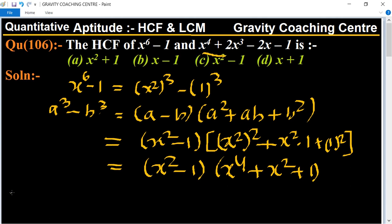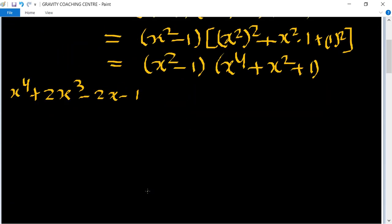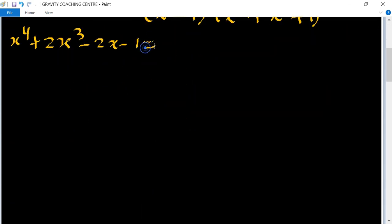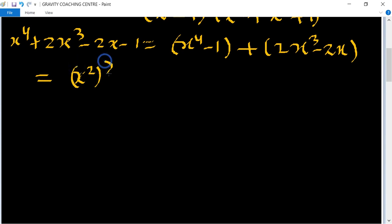And another part is x to the power 4 plus 2x cube minus 2x minus 1. So now we separate x to the power 4 minus 1 and 2x cube minus 2x. And now we take the common, sorry, now we use the again identity a square minus b square in first part and second part we will take the again identity.